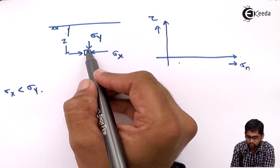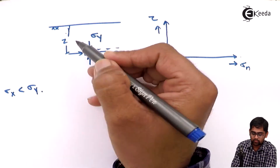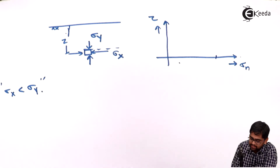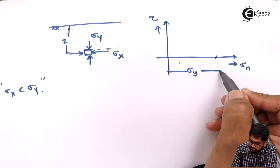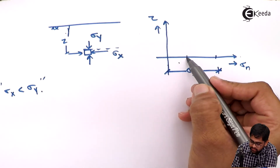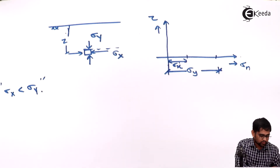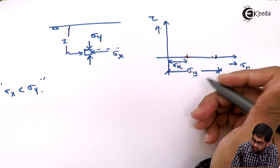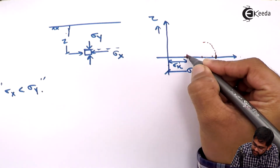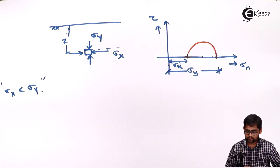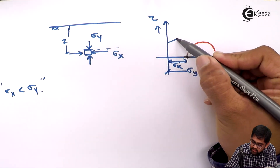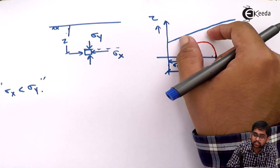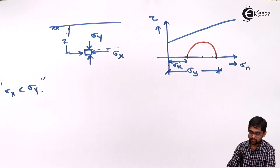Sigma y is due to the surcharge of the soil present above the soil element at depth z. When we plot σy on the axis, and then plot σx which is less than σy, we draw a circle with diameter equal to σy minus σx. We call this the Mohr circle. As long as the Mohr circle lies below the failure envelope, this is called the safe condition of a soil. If the Mohr circle touches the failure envelope, this indicates that failure has occurred.